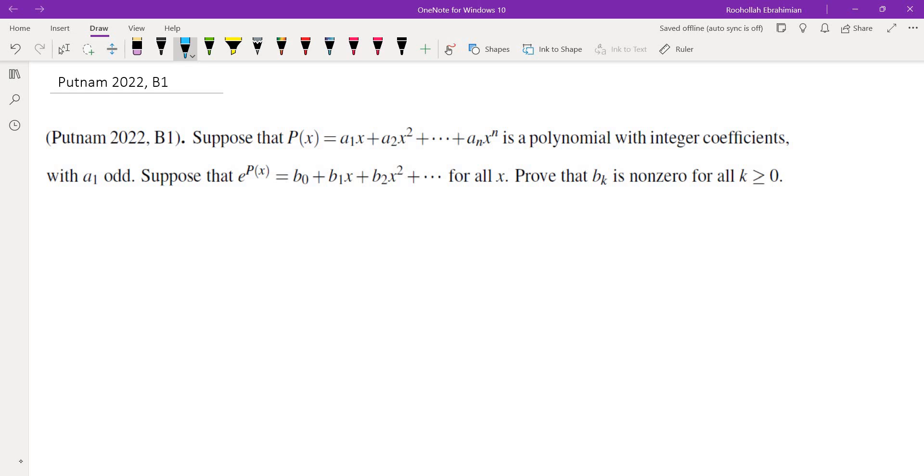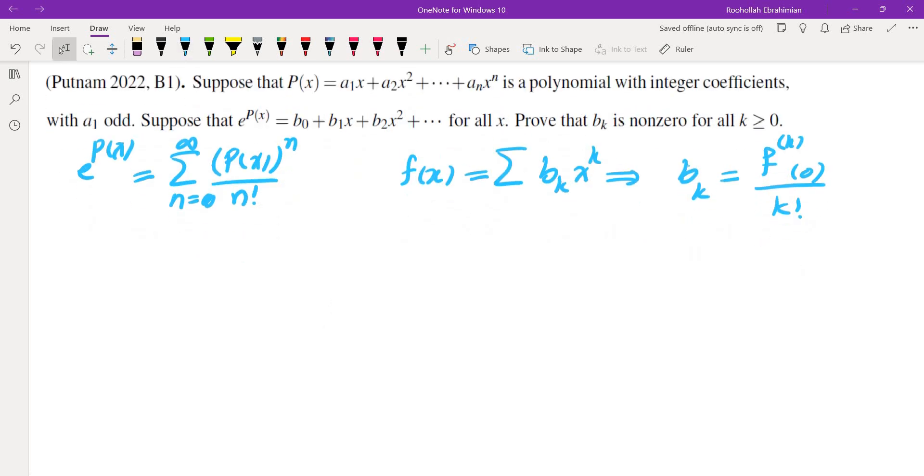The first thing that might come to mind is perhaps we can write down e to the power of P(x) using its power series and then evaluate the coefficients, perhaps find a formula or somehow show that the coefficients are all nonzero. That might be possible but it seems like a challenge. Instead, I know a formula for each one of these. If you have a function that is equal to its Taylor series centered at zero, then I can find a formula for bₖ. That's f^(k) evaluated at zero divided by k factorial. So if I can find the kth derivative of this function, then I plug in zero and show that it's nonzero.